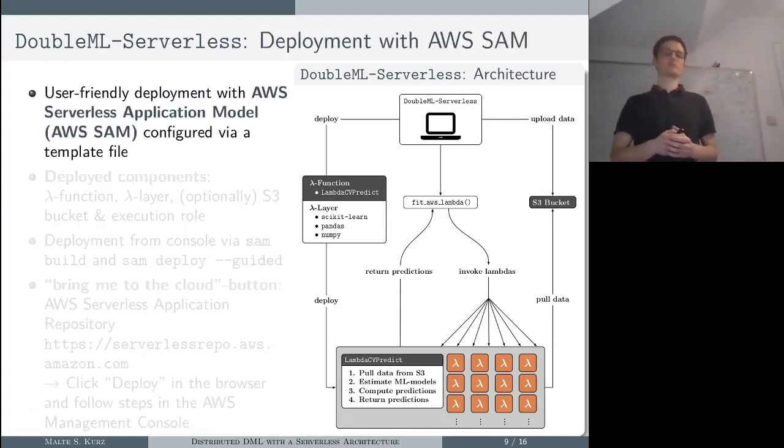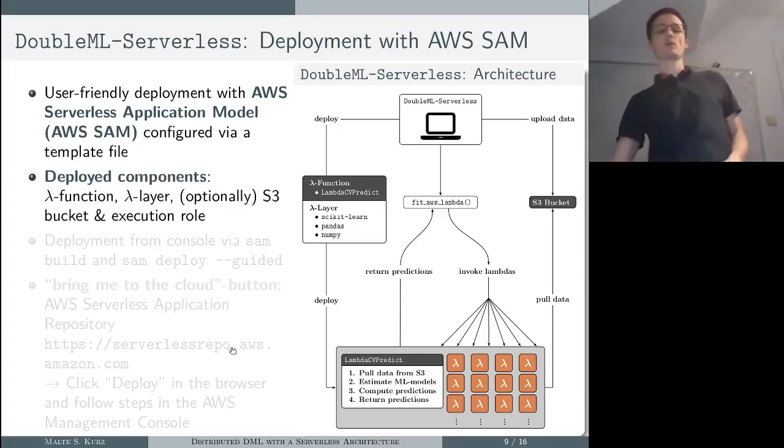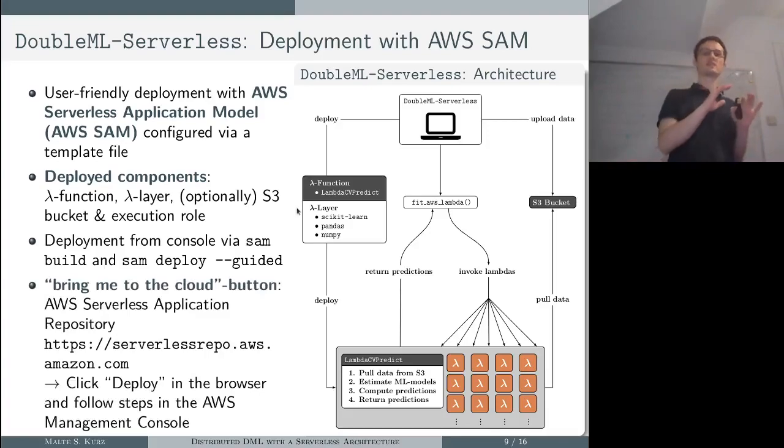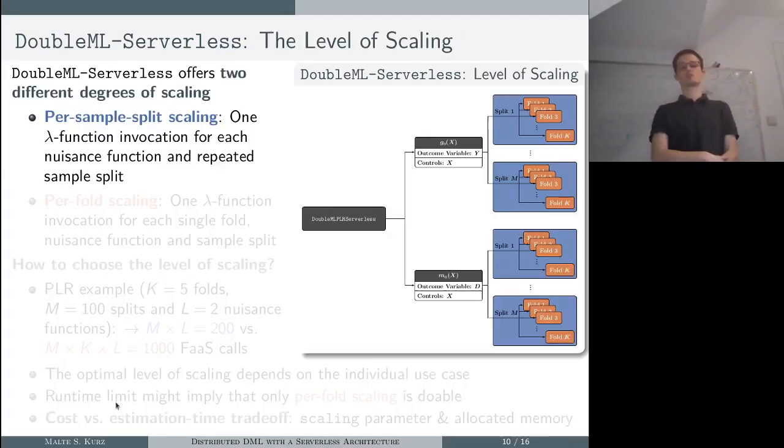I already mentioned that our prototype is quite easy to deploy. For that, we use AWS Serverless Application Model (AWS SAM), which is configured via a template file and deploys all those components we see here on the right: the Lambda function, the Lambda layer, and optionally also an S3 bucket and an execution role. The deployment is pretty easy, so basically in the console you just have to run sam deploy guided, and then in a guided way you can deploy all those components. Even more convenient is using AWS Serverless Application Repository. We uploaded our application there and you can basically just click on deploy, and in a guided way then in the browser you can deploy the application to your AWS account.